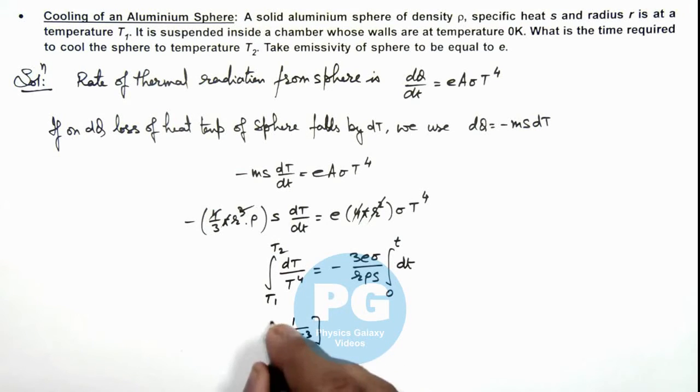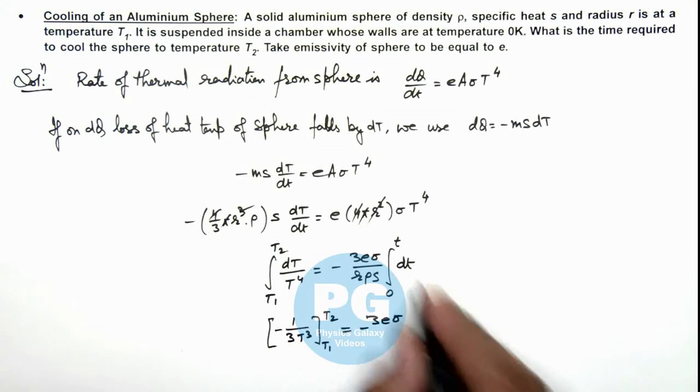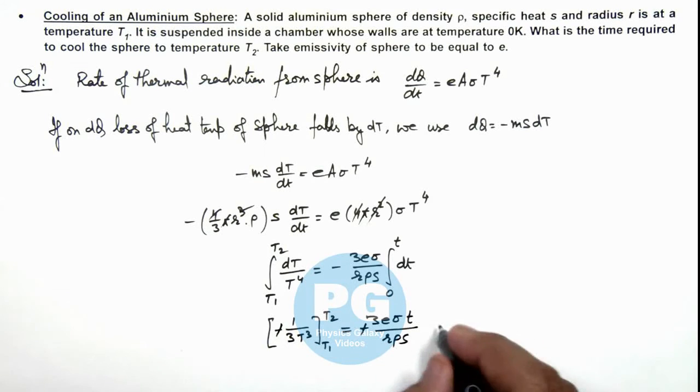We substitute limits from T1 to T2, and this is equal to minus 3eσ. Integration of dt will be t divided by rρs. Here this negative sign also gets cancelled out.